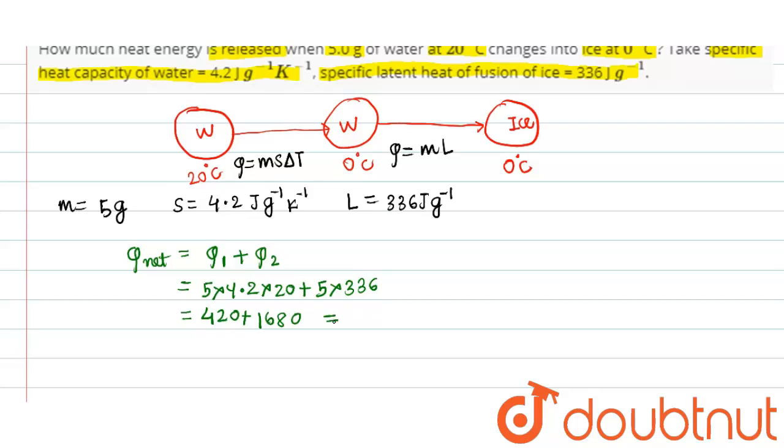This comes out to be 2100 Joule. Thus, our final answer is net heat released, Q net released in the whole process, equals 2100 Joule. This is our final answer friends.